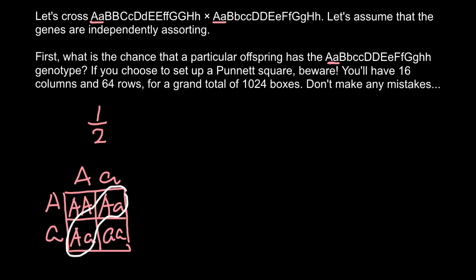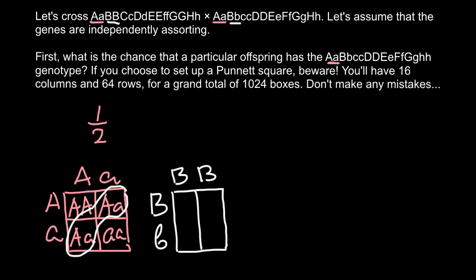Now let's analyze gene B. Parent one is homozygous dominant and parent two is heterozygous. Building a simple Punnett square for this gene shows that 50% of the progeny from this cross — one parent homozygous dominant, the other heterozygous — will be heterozygous. So we record one half for gene B.